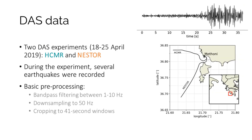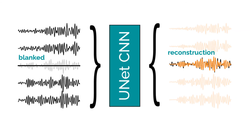The data we used in the study were collected in two back-to-back distributed acoustic sensing experiments conducted in April 2019. In these experiments, two submarine fiber optic cables were sensed continuously, which recorded dozens of regional earthquakes. Out of those recorded earthquakes we selected a few and applied some standard preprocessing such as bandpass filtering. We then constructed a UNET convolutional autoencoder which takes a set of waveforms as an input. In this input we set one waveform to zero, and the target for the model is to predict that one blanked waveform.